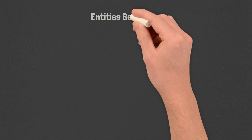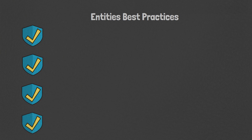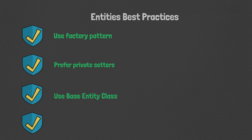In working with entities, there are four best practices that we should follow: use the factory pattern for object creation, prefer private setters with methods to update, use a base entity class, and apply the single responsibility principle to entity modeling.